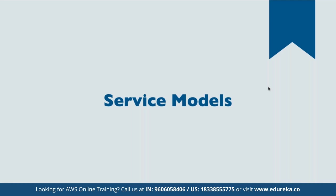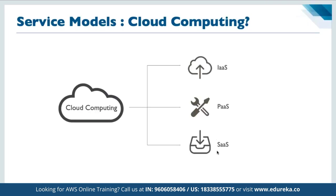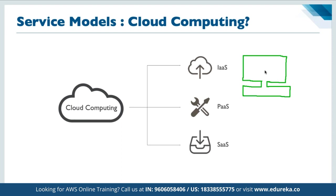There are three main service models in cloud computing: Infrastructure as a Service, Platform as a Service, and Software as a Service. Infrastructure as a Service is like going back 10-12 years — a vendor gives you only the hardware with no operating system installed. You have to take care of drivers, networking, everything yourself. That means when we get only the hardware and have to perform all installation ourselves, that is Infrastructure as a Service.